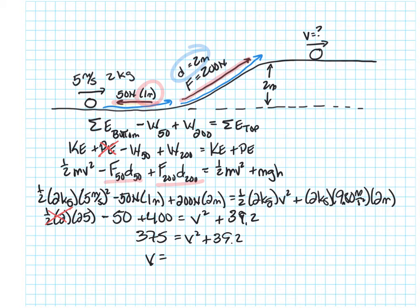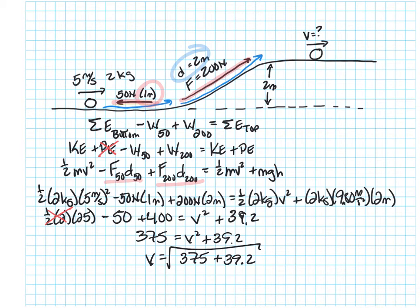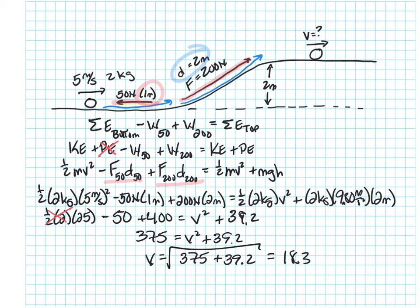So v is equal to the square root of 375 minus 39.2... wait, 375 plus 39.2... and that gives us 18.32 meters per second.